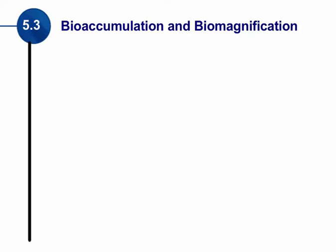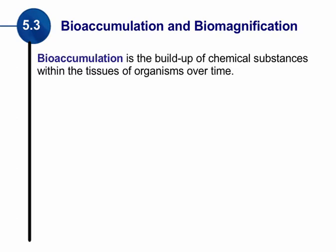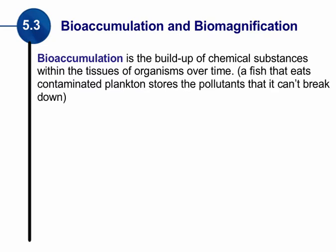Let's look at bioaccumulation and biomagnification. Bioaccumulation is the buildup of a chemical substance within the tissue of an organism over time. This takes place inside an organism. If it's in a polluted area, these chemical substances over time build up or bioaccumulate inside that organism or species. One example could be a fish eating in a contaminated area — the plankton stores the pollutants, and the fish continues to eat that plankton, so over time it will bioaccumulate in that fish.